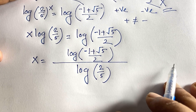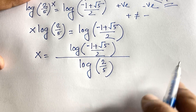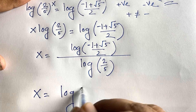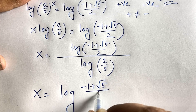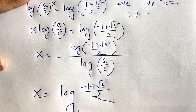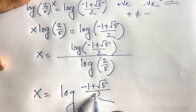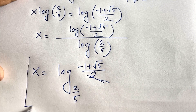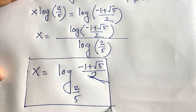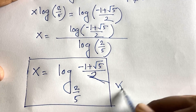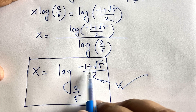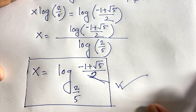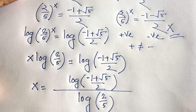Using the change-of-base formula, log a/b = log a - log b, this can be written as x = log_{(2/5)}((-1 + √5)/2), where the base is 2/5. This is our final answer to the math olympiad question. Thank you all — if you enjoyed this video, please subscribe for more interesting videos. Goodbye, take care!